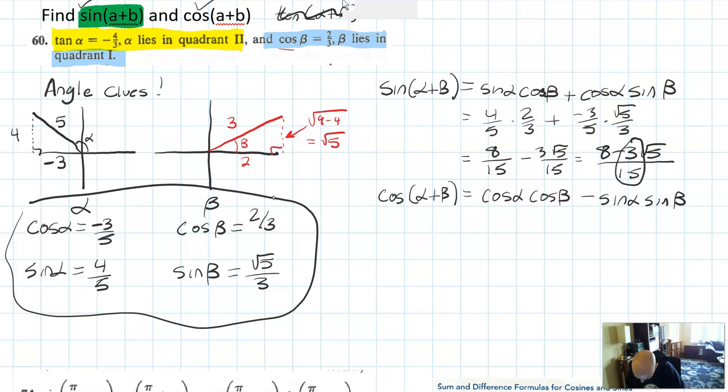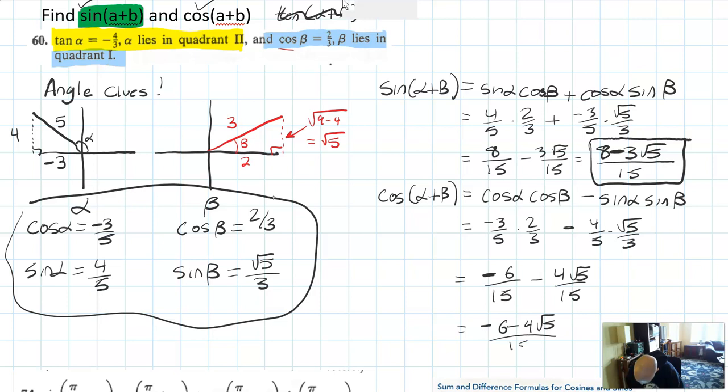So nothing really simplifies out of that, so it looks like I'm going to have eight minus three root five over fifteen. Don't do anything silly like cancel the three. Remember, if you're going to cancel it, you'd have to cancel out of every term here since there's a subtraction, so I would call that your final answer. Let's do the cosine of α plus β. So that's cosine of α cosine of β minus sine of α four-fifths sine β which is root five over three. So how will that simplify? Well, it looks like here I'll have negative six-fifteenths minus four root five over fifteenths.